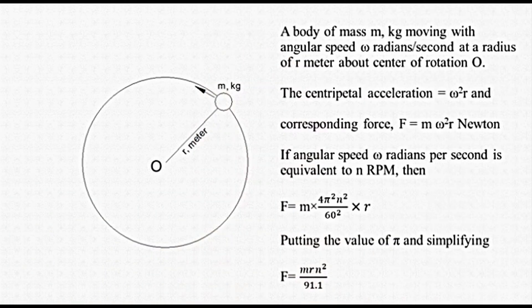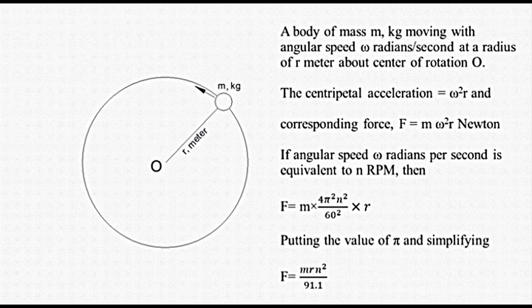If you refer back to the episode, you will find that I talked about a mass attached to a string and revolving in a circle. In the diagram related with it, I considered a body of mass m kg moving with angular speed of omega radians per second at a radius of r meter about center of rotation O. The centripetal acceleration is equal to omega squared r, and corresponding force F is equal to m omega squared r newton. If angular speed omega radians per second is equivalent to n rpm, then F is equal to m into 4 pi squared n squared divided by 60 squared into r.